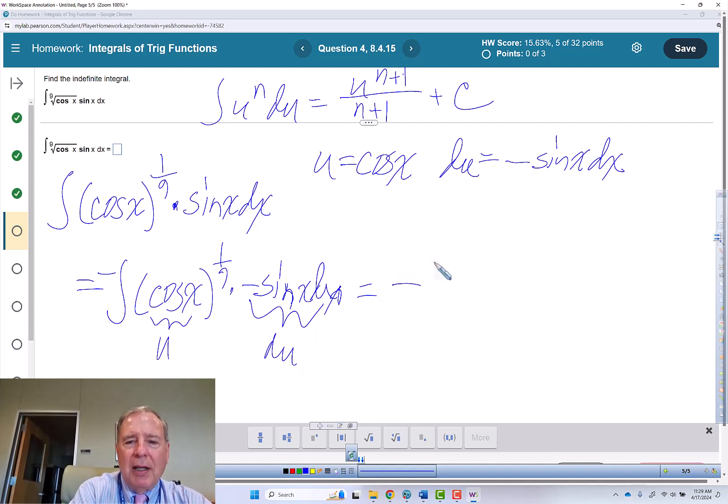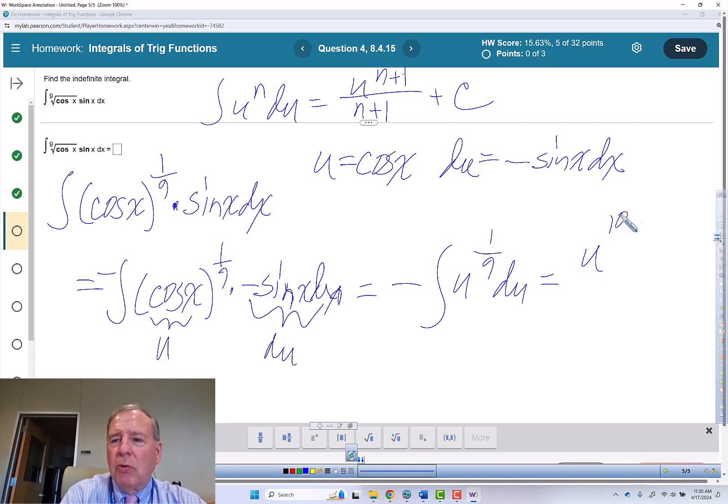So we can rewrite this as negative, the integral of u to the 1 ninth du. We're going to add 1 to this exponent. So that gets me to u to the 10 ninths divided by 10 ninths plus c.